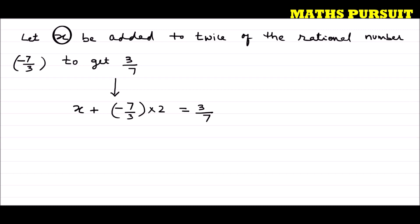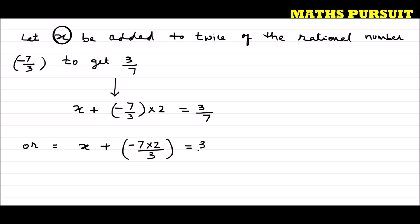Now if we solve this equation and get the value of x, that is going to be our answer. We can write x plus minus 7 into 2 upon 3 — that is minus 7 into 2 upon 3 — is equal to 3 upon 7. This is what we can write.